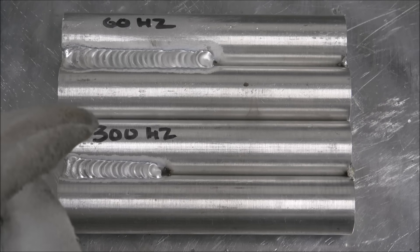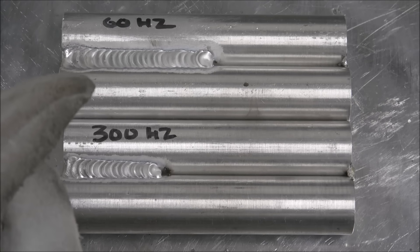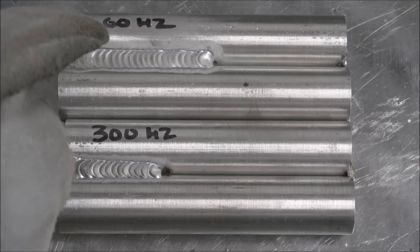If you have a TIG welder and you're trying to weld aluminum and it's not quite putting out as much heat as you need it to, it may help you out if you reduce your frequency.